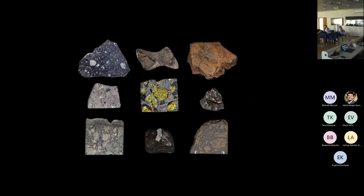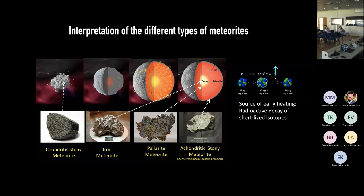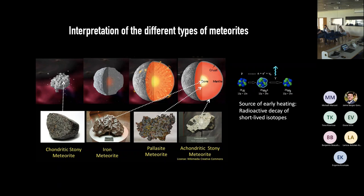What does this mean in terms of origin? Chondritic stony meteorites come from undifferentiated planetesimals. Achondrites, stony-iron, and iron meteorites come from different compositional layers of a differentiated planetesimal. In the case of stony-iron meteorites like pallasites, people have suggested they originated at the interface between the core and mantle of these differentiated planetesimals, though that's not entirely clear — they could also come from energetic collisions.